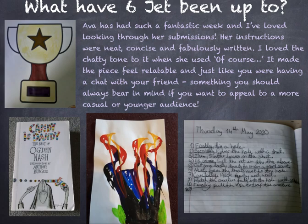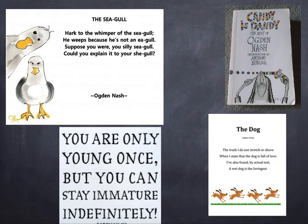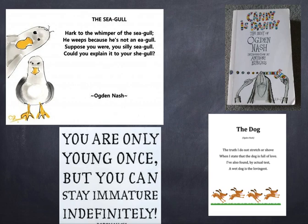Ava is also reading a poetry book by the poet Ogden Nash — an American poet. I hadn't heard much about him before, but Ava sent in a picture of her book and I researched him. He looks like such a funny poet — he does quite a lot about animals and they're all quite silly but really well written. I highly recommend you check him out because he's so entertaining. Thank you, Ava — somebody else who shared what they're reading and I found out something new.